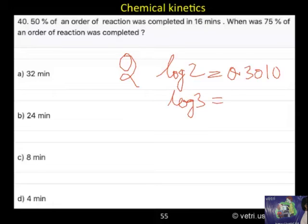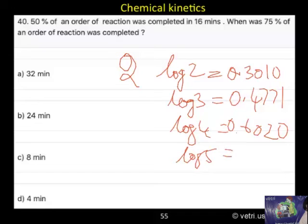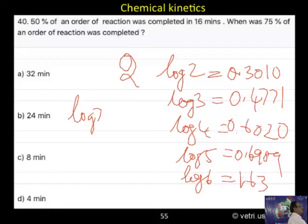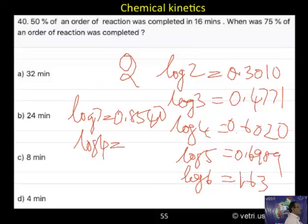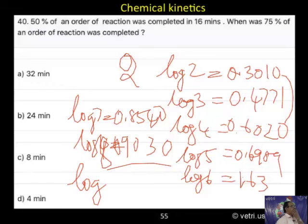That's why I asked you to memorize. Log 2 it is 0.3010, log 3 0.4771, log 4 nothing but 2 times of this 0.6020, then log 5, 5 into 0.6989, then log 6 just now we have 0.7781, log 7 it is 0.8540, log 8 again how to do that 2 into 4, 8 so you add these two values, log 8, 2 into 4 log 2 plus log 4, log 9, 2 into log 3.